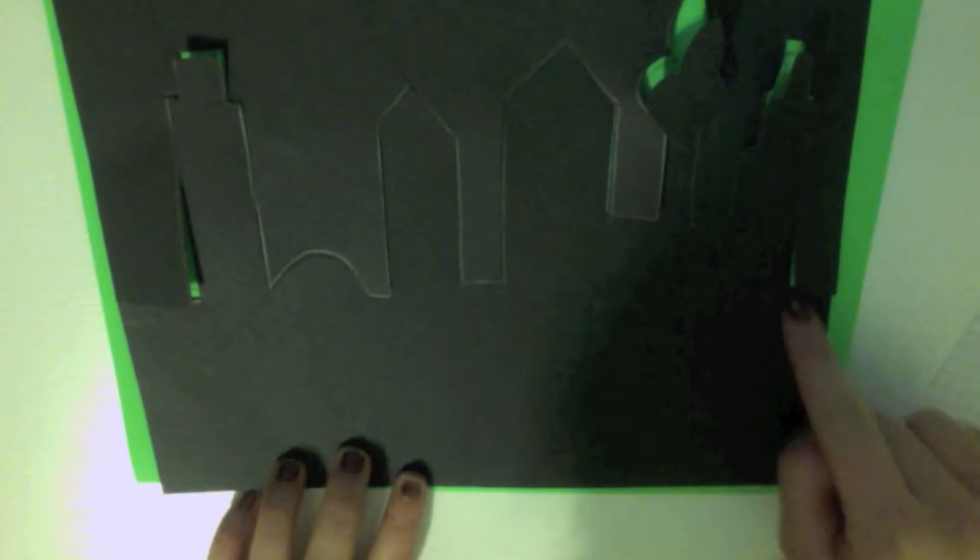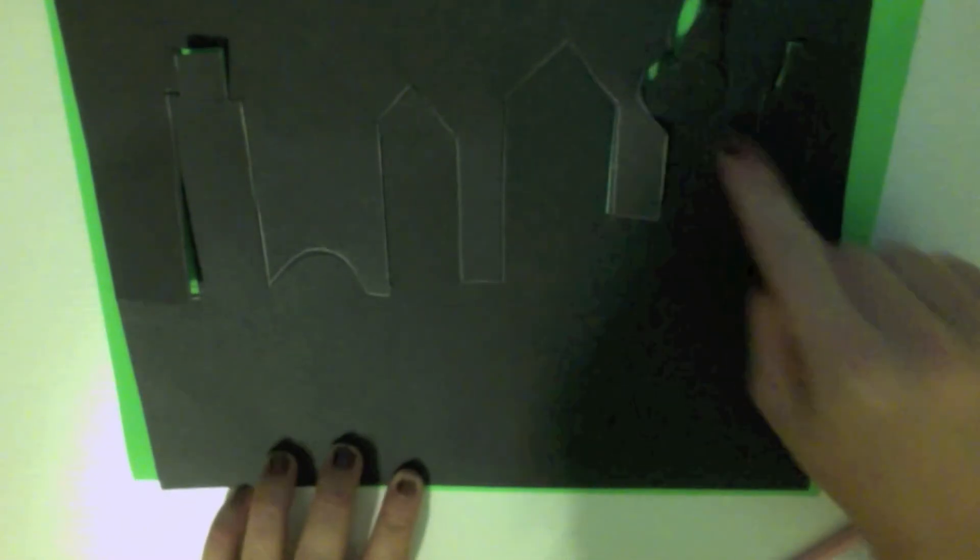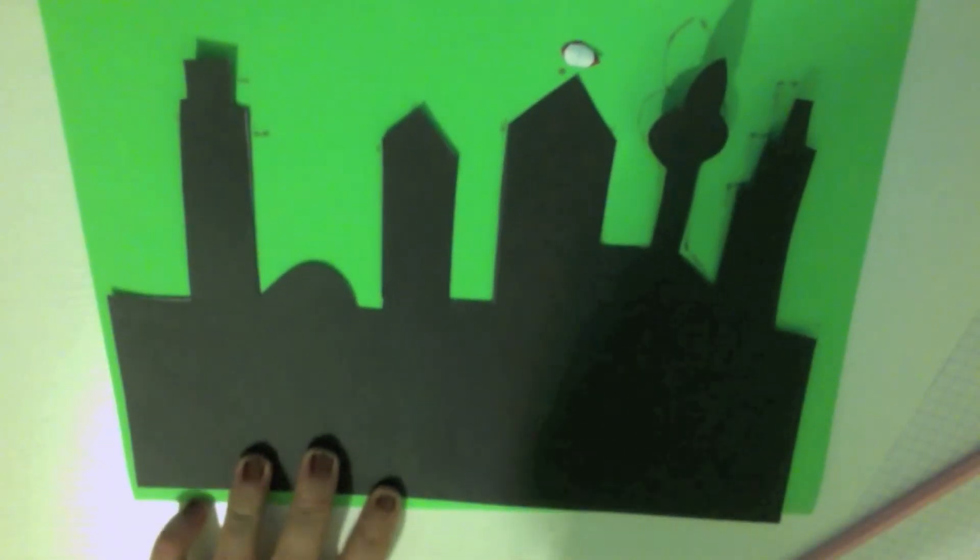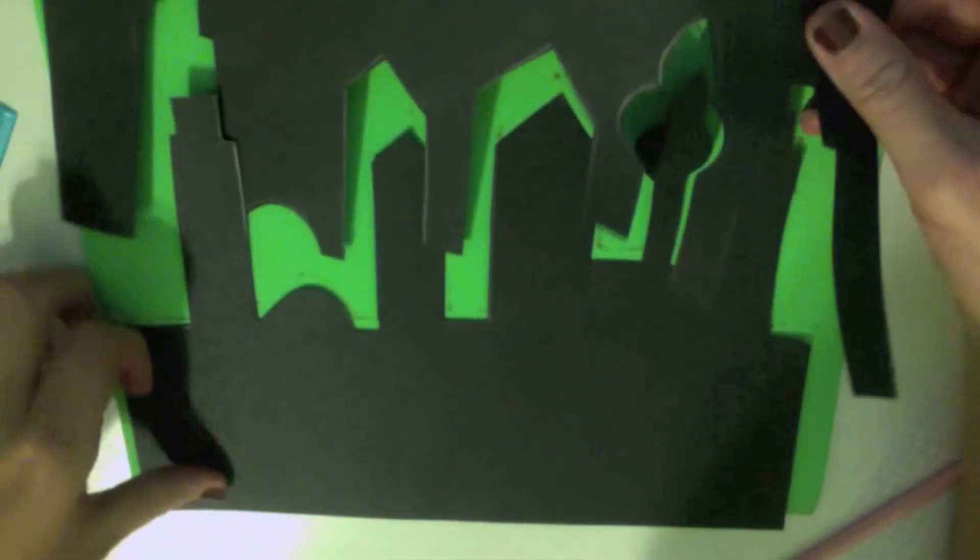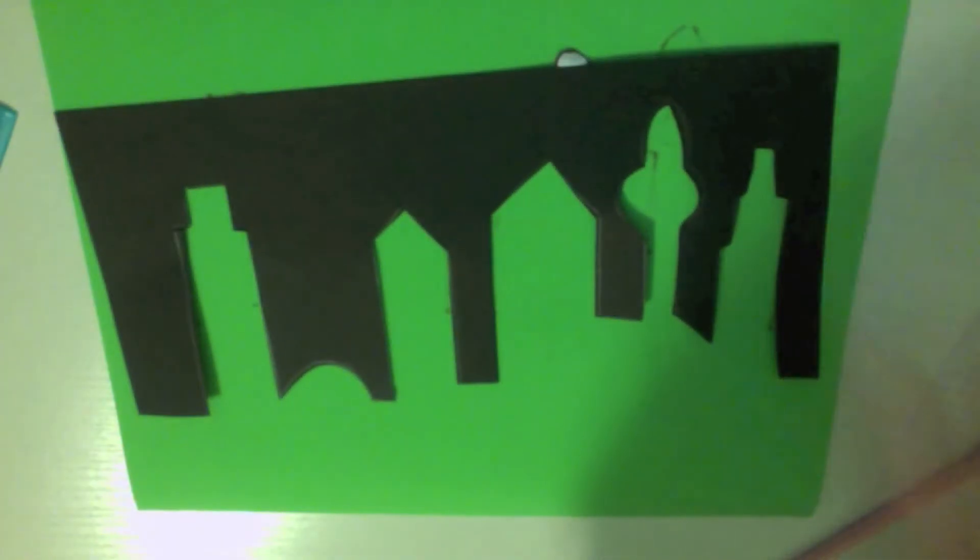It's so important to stay on your pencil line because now you have your positive space, which is your city, and your negative space, which is the sky around it.